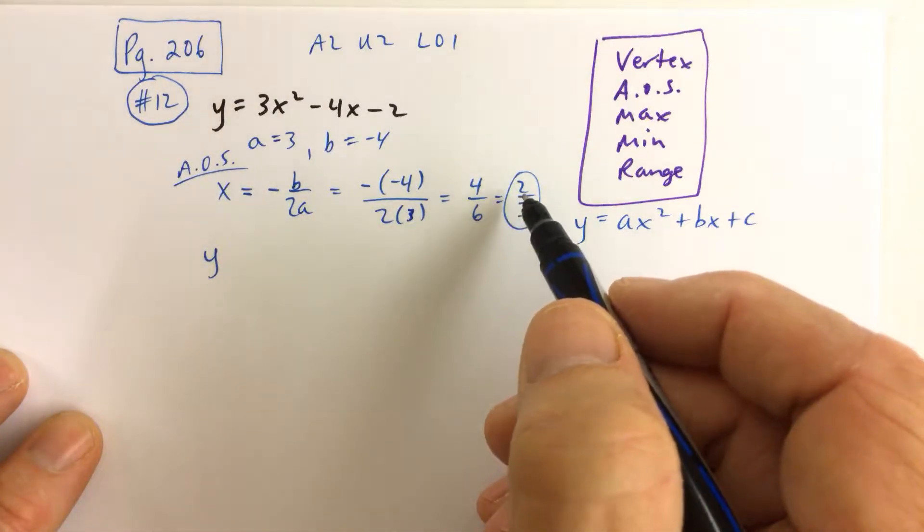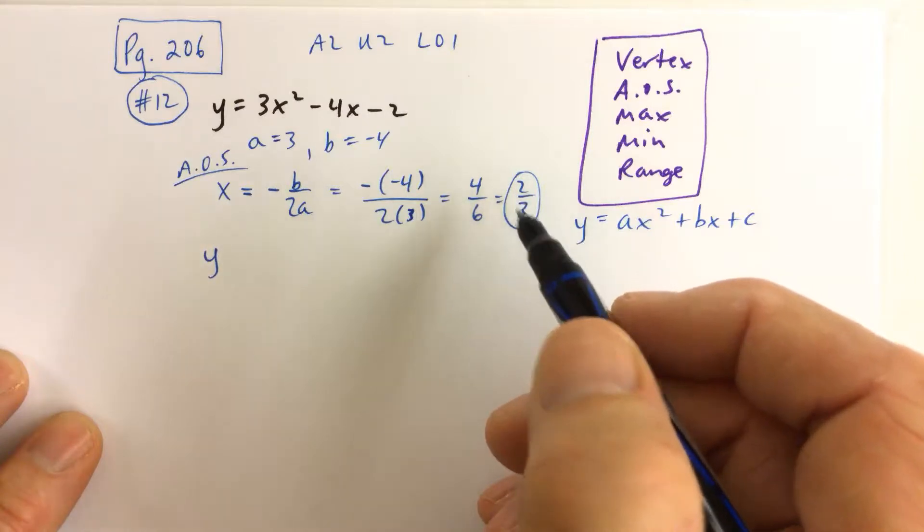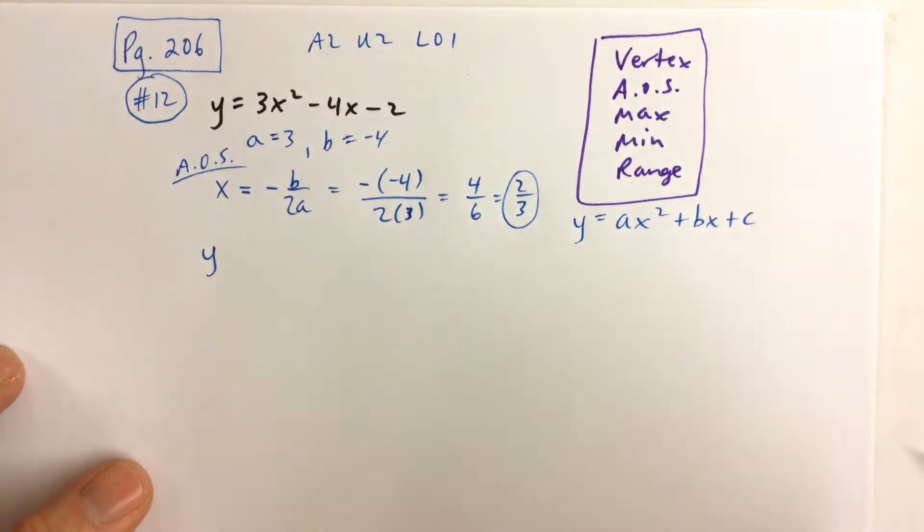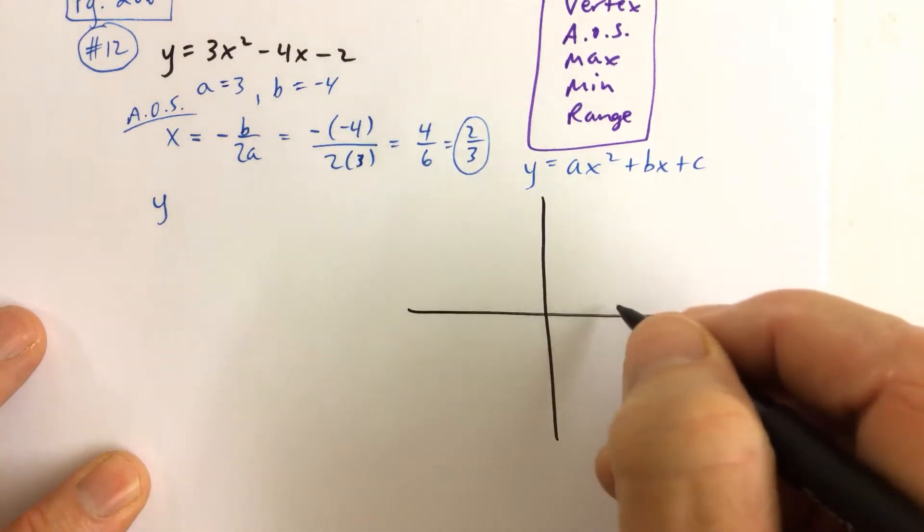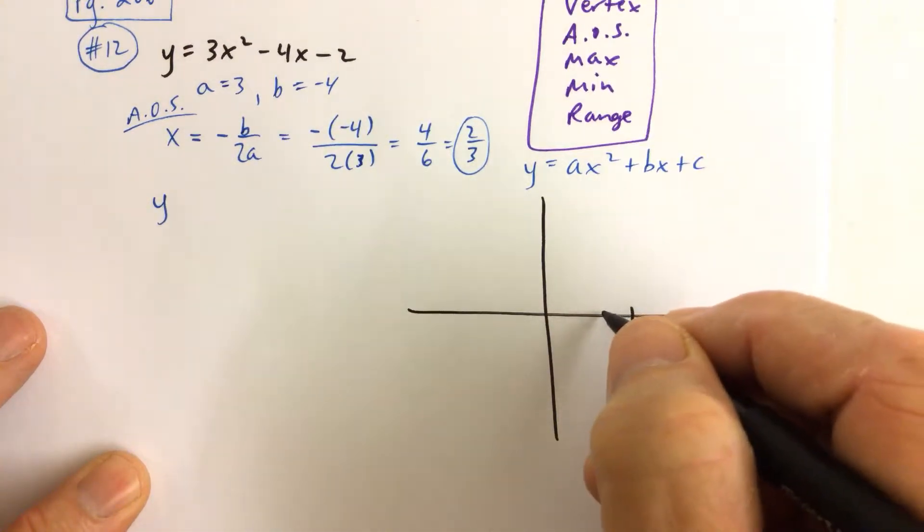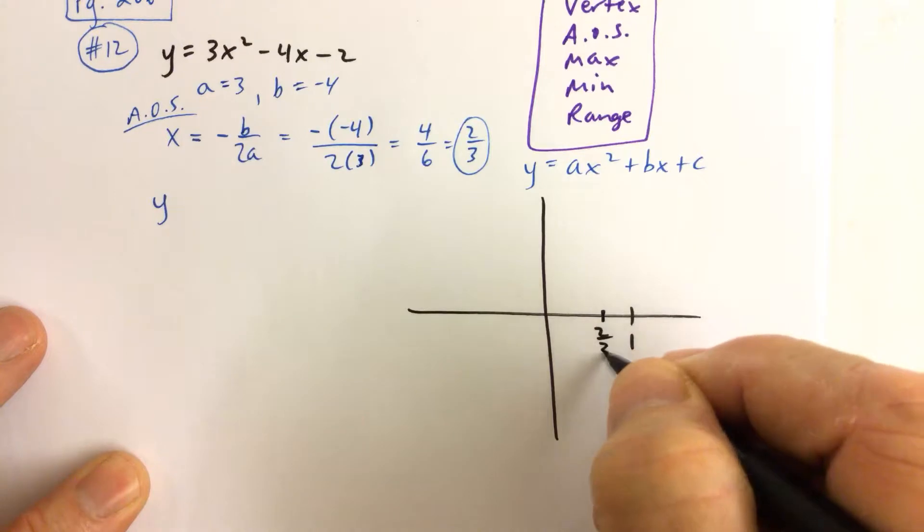But remember, that cuts, let's do that right now actually. That splits the vertex. So there's 1, then 2 thirds is right there.